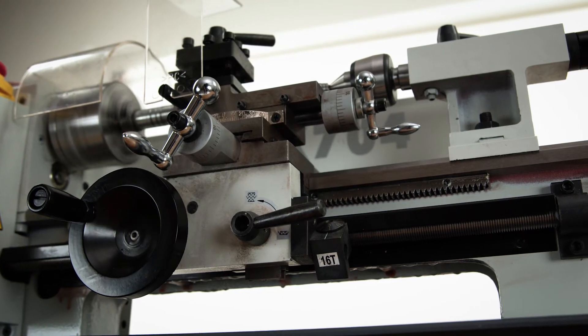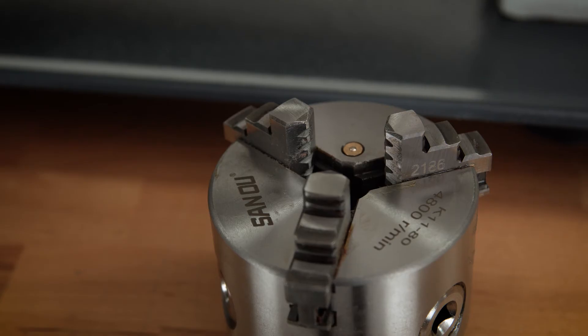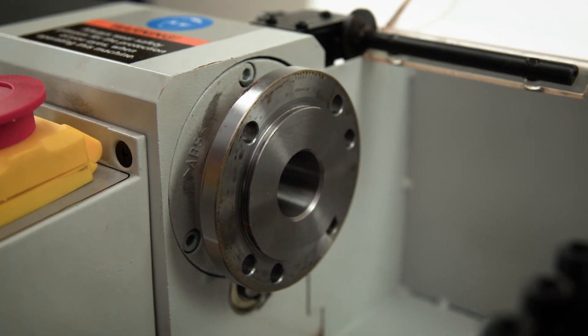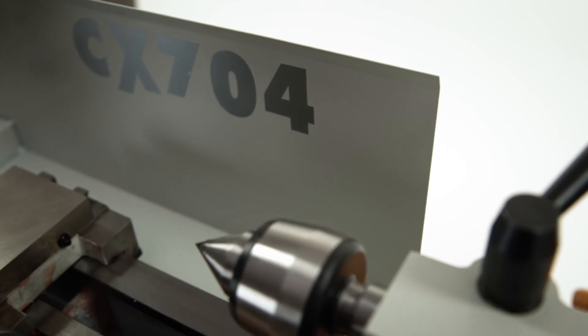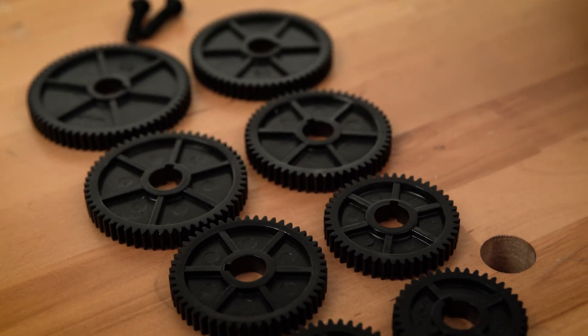It comes complete with a thread dial indicator, three-jaw chuck, MT3 spindle taper, MT2 tailstock taper, chip tray, splash guard, and a full set of change gears.